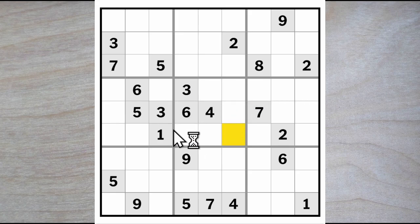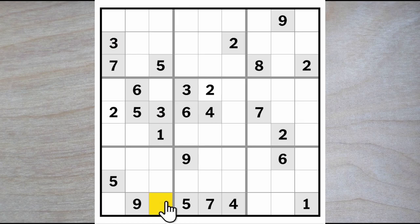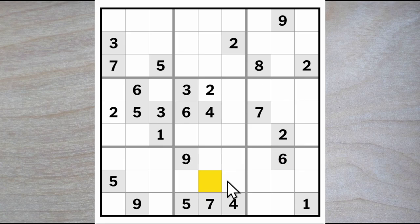Looking at the center box, I see two blocking down and over, so a 2 must go here. That gives us a 2 for this square in the first column. We have 3s blocking here and here, so a 3 must go here or here. And we have a 6 blocking across — one of these is a 6, therefore we have a 6 here or here.